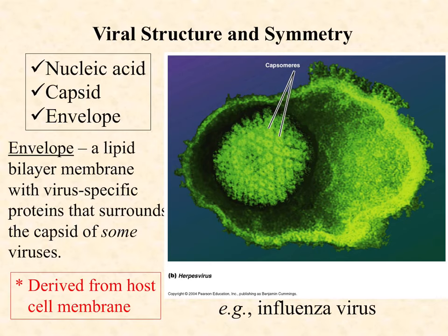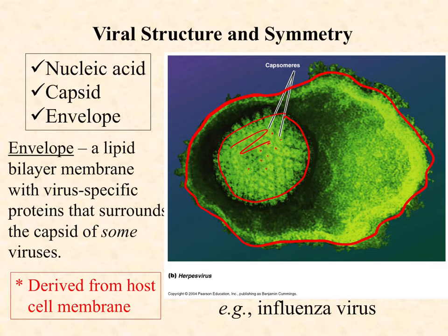An envelope is a lipid bilayer — truly a phospholipid bilayer, a membrane — with virus-specific proteins on the surface, and it surrounds the capsid of some viruses. For example, in this image of a herpes virus, they intentionally broke apart the envelope. You can see the envelope sort of busted open — it looks like an egg yolk almost. Here is the edge of this viral envelope, busted open and splayed out. The image is also showing a symmetrical virus capsid where you can see individual capsomeres.